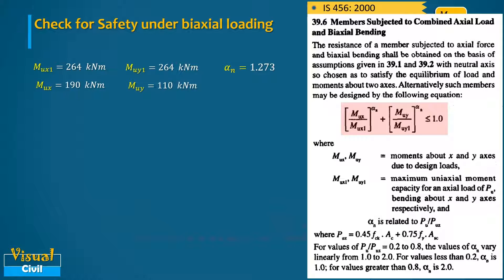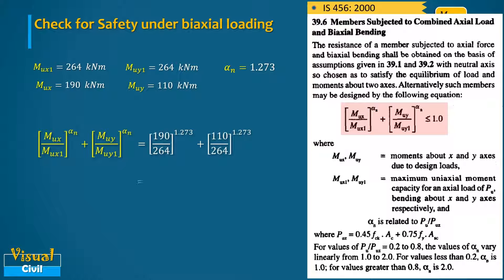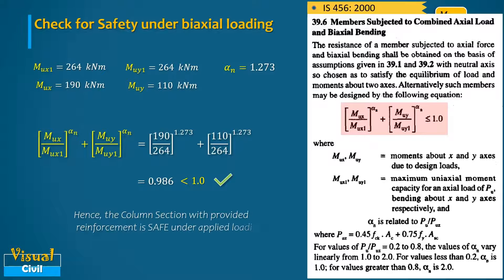Substituting all the values into the biaxial interaction equation from Clause 39.6, the left-hand side evaluates to 0.986, which is less than 1. Hence, the column section with the provided reinforcement is safe under the applied biaxial loading.